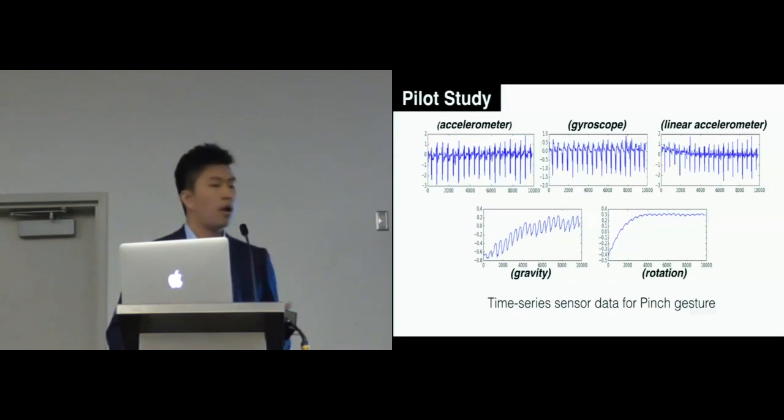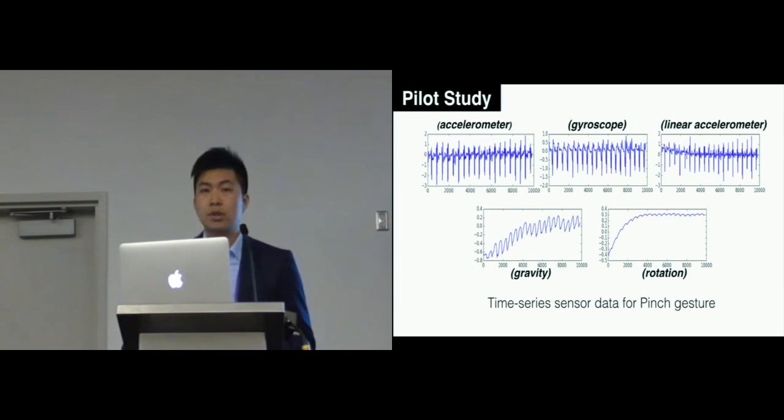In a pilot study, we recorded data from all the motion sensors available through Android API: the accelerometer, gyroscope, gravity, and rotation sensors. We continuously collected data for a length of 10 seconds for each gesture with a sampling rate of 50 hertz, and we used a one-second sliding window to perform statistic and FFT feature extraction.